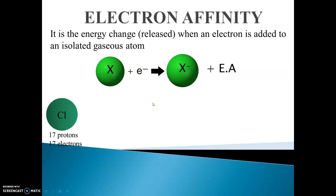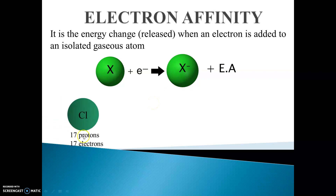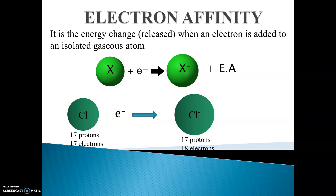Let's take an example of a chlorine atom having 17 protons and 17 electrons. It has only one electron less than the stable noble gas configuration, so it accepts — that is, gains — one electron and becomes a chloride ion with 17 protons and 18 electrons.